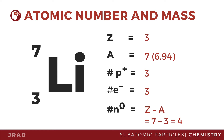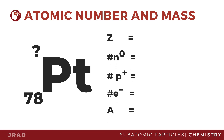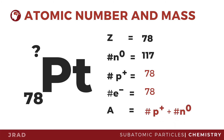Let's have another example. Platinum is one of the most malleable metals. It has 78 protons and 170 neutrons. Since the atomic number is equal to the number of protons and electrons, we can note that the number of protons and electrons are both 78. To find the mass number, we simply add the number of protons and neutrons together, which gives us 195. Therefore, the mass number of a platinum atom is 195.